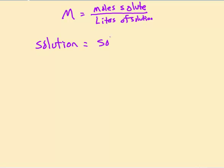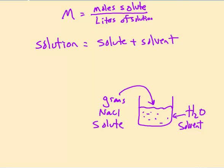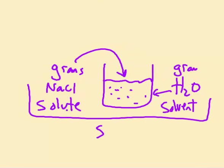A solution is equal to the solute plus the solvent. If we have a beaker filled with water, water would be the solvent — it is the one that is going to dissolve something. The solute will be whatever we drop in there, typically in grams. So if we add some NaCl, the grams of NaCl going in to dissolve is the solute. The mass of the solute plus the grams of the solvent gives you the grams of the solution.